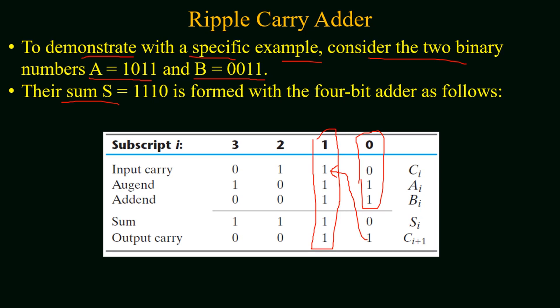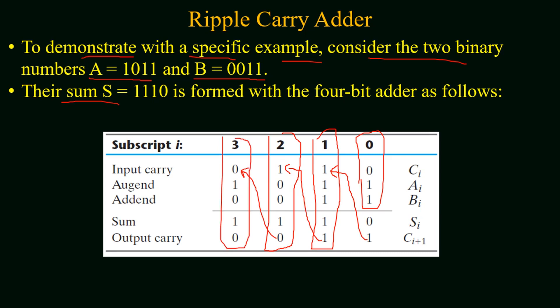At the next stage, three bits — one, one, and one — are added, giving sum = 1 and carry = 1. That carry is transferred to the next stage with bits one and zero and zero, giving sum = 1 and carry = 0. Since carry is zero, the final stage adds one and zero with carry zero, giving sum = 1 and carry = 0.